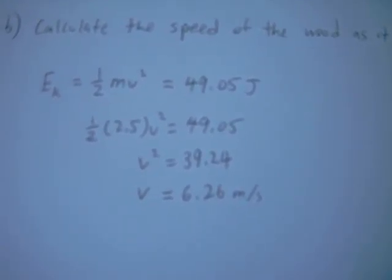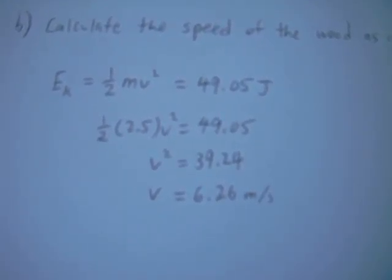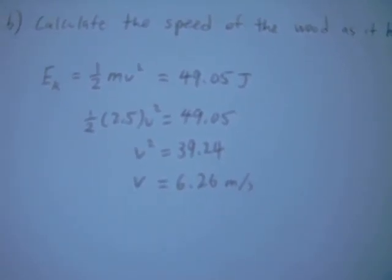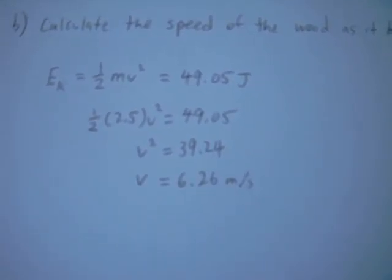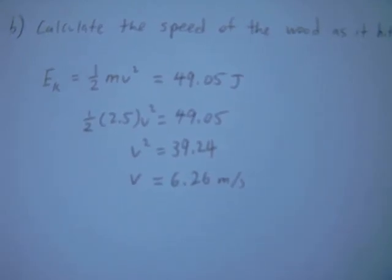and we know all our other variables except for our v here. So let's just substitute that in to find our speed, and that's our answer.